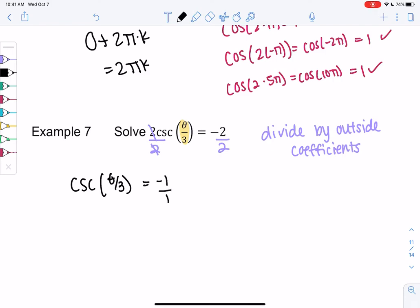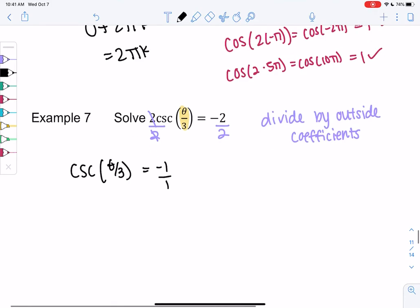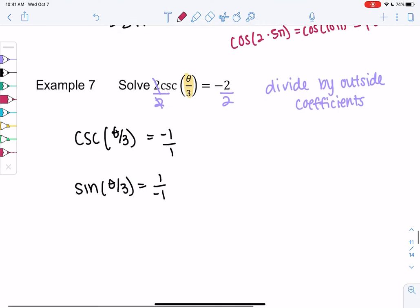I'm going to write it as negative 1 over 1 because I don't like cosecant. I like sine. And we know sine is the reciprocal. So 1 over negative 1, or sine of θ/3 equals negative 1. It's just easier to solve sine rather than cosecant. And I was allowed to do that because of the reciprocal.